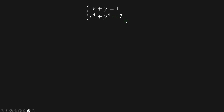Hello guys, welcome to the channel. Today we're going to be solving this problem here. It's given x plus y equals 1, and x to the fourth plus y to the fourth equals 7. So what are the values of x and y? Let's do it.